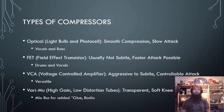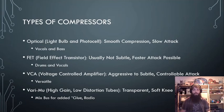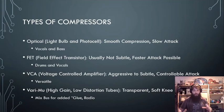The next one is VariMu. It uses high-gain, low-distortion tubes to create very subtle compression. It has a very soft knee and is very transparent, so you'll usually find it on a radio to make sure the signal on the back end isn't going to overload.